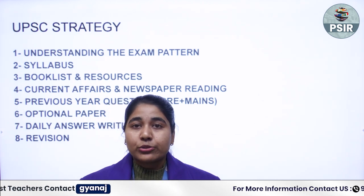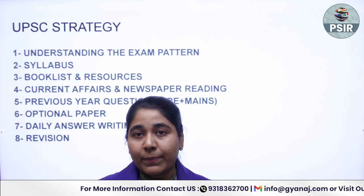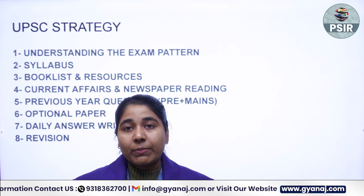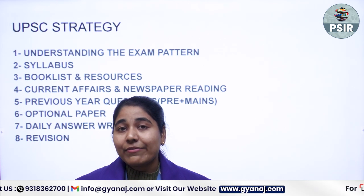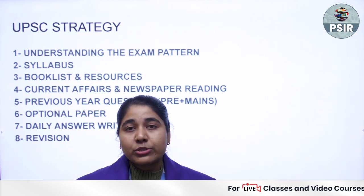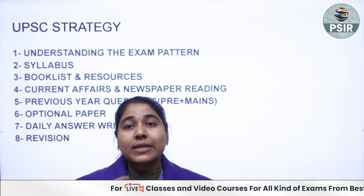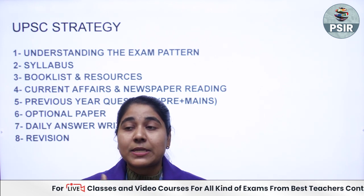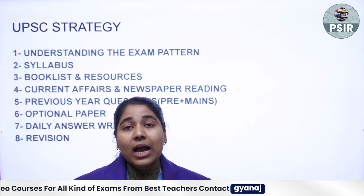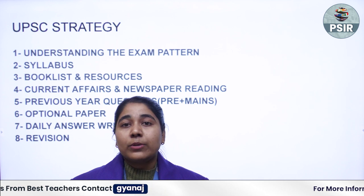Next is your optional paper. You have two optional papers — Paper 1 and Paper 2, each of 250 marks, totalling 500 marks. When deciding your optional subject, consider what subject you graduated in, what you are most interested in, and what is trending. If you think you can perform better in a particular subject, then choose that as your optional paper.